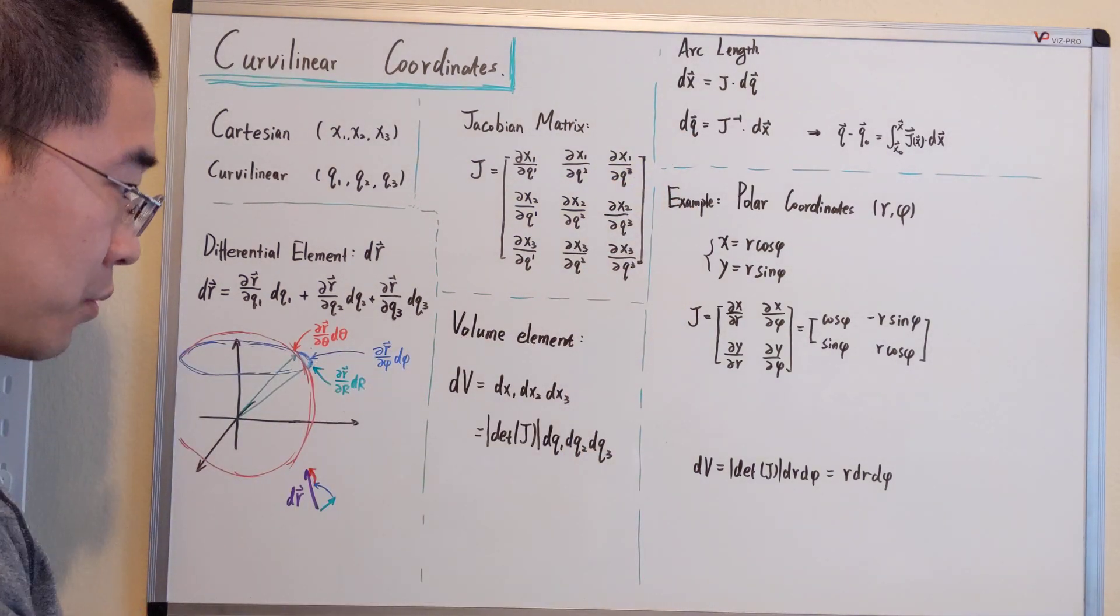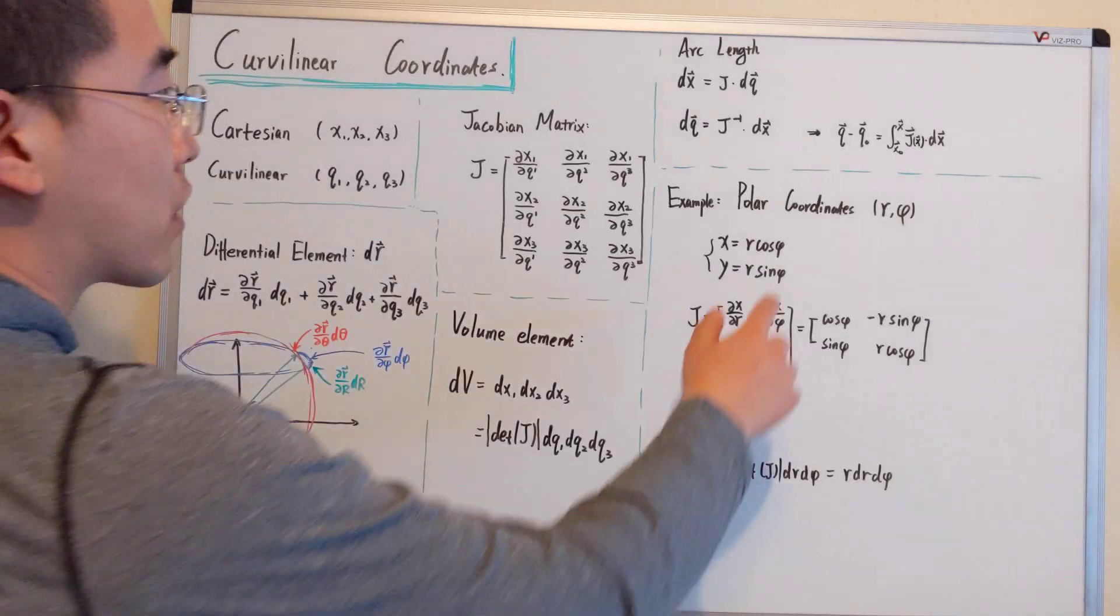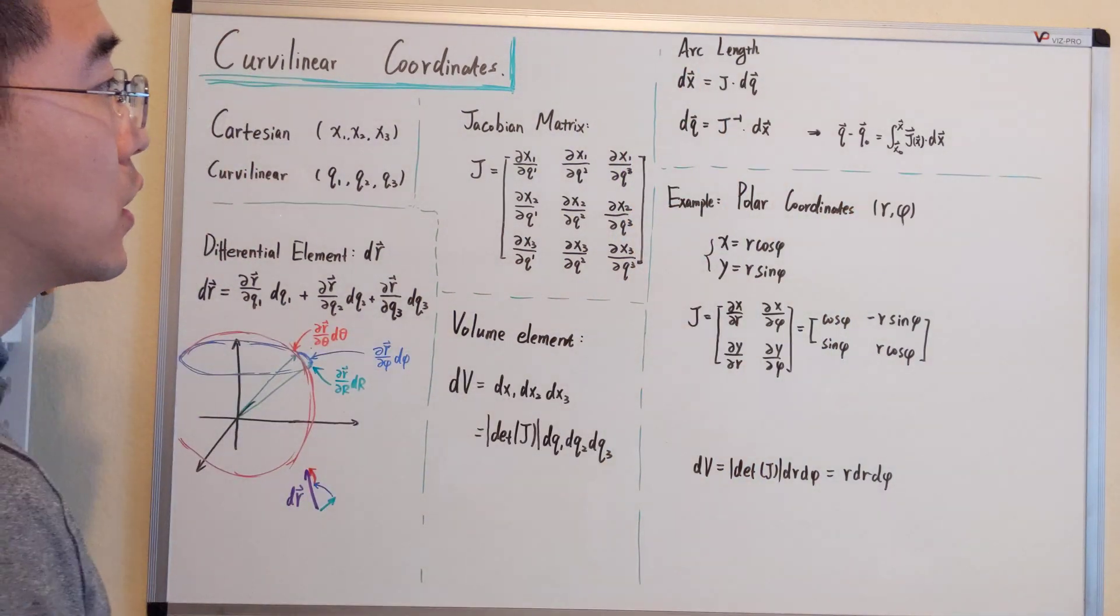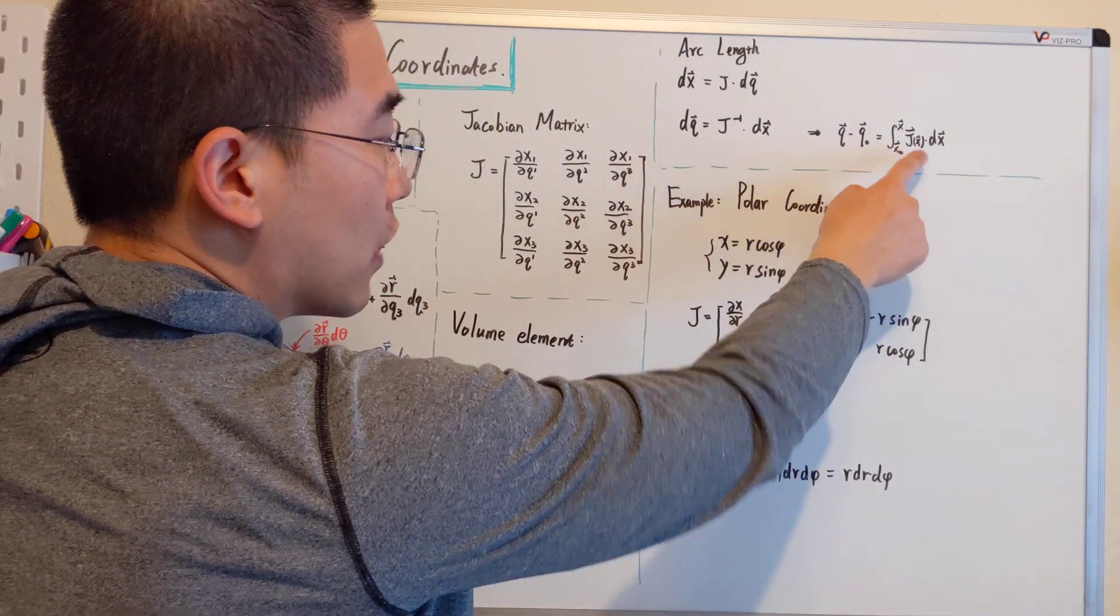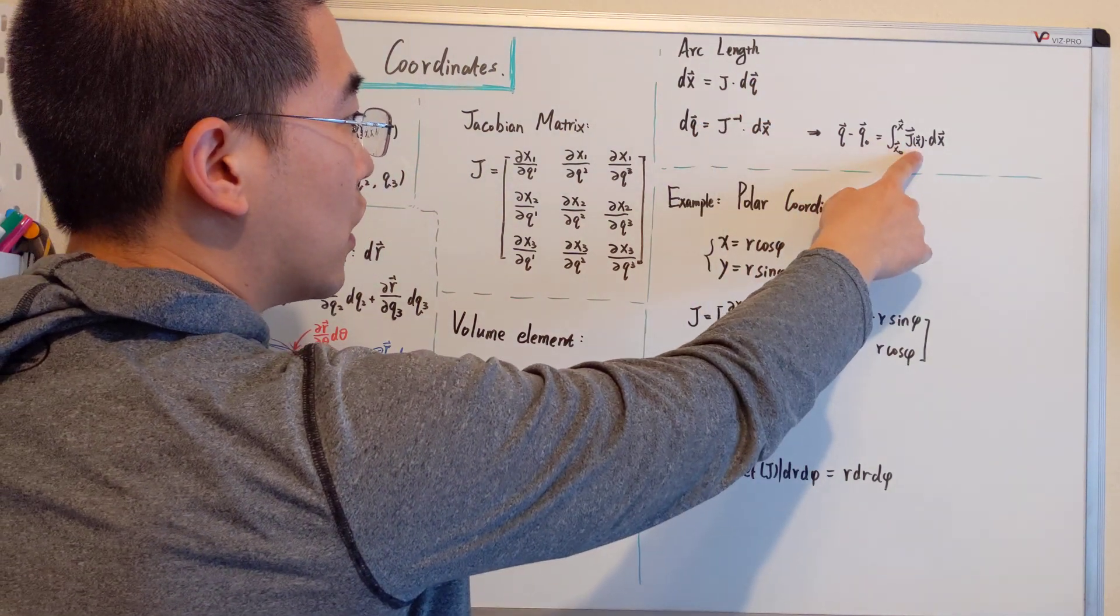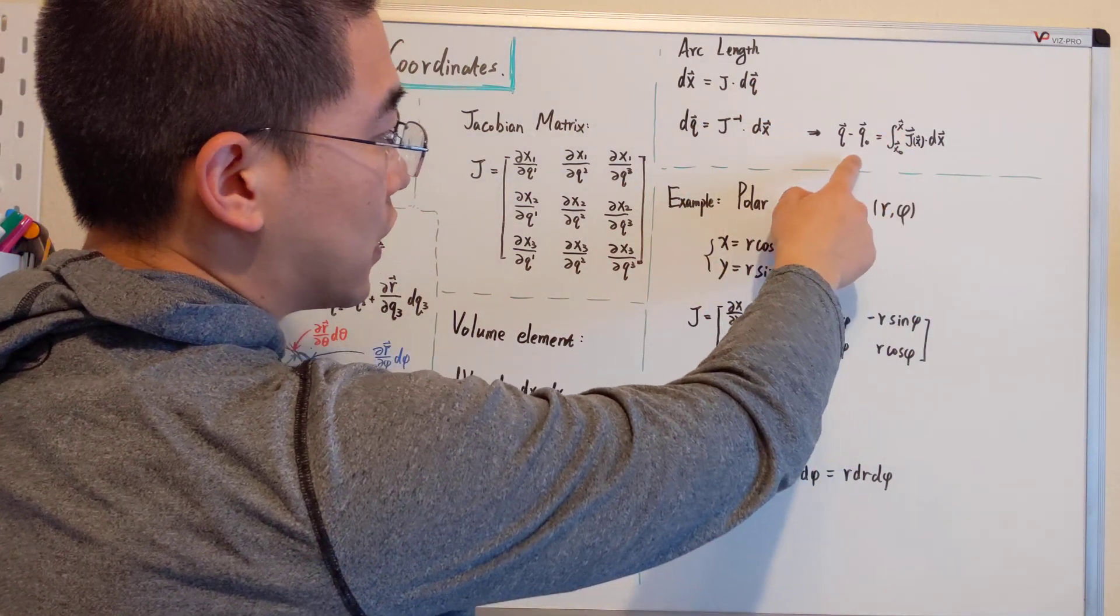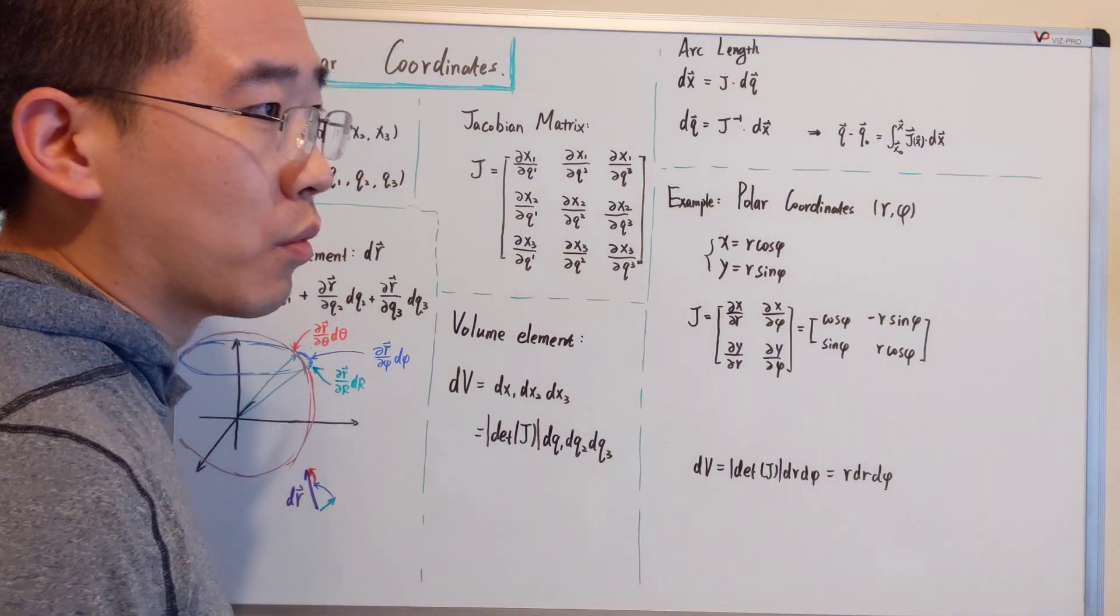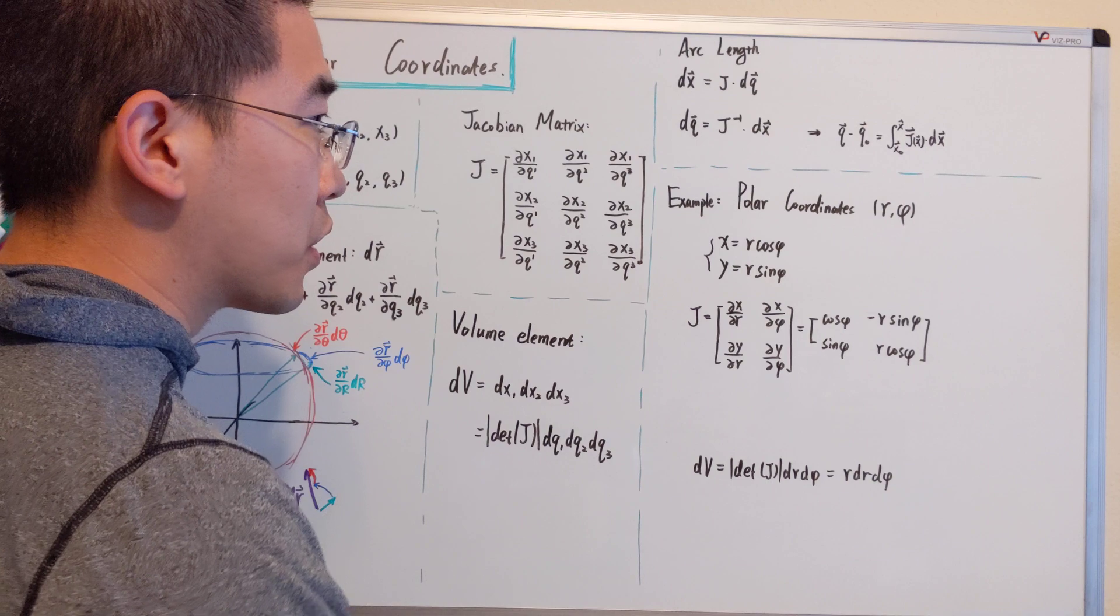For some reason, if we don't have the coordinates for the curvilinear coordinates or the Cartesian coordinate, if the Jacobian is given, then we can actually get the other coordinate that we may need by doing integral.